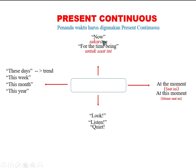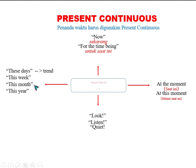Ada beberapa penanda waktu di mana seorang pembicara bahasa Inggris harus menggunakan kalimat berpola Present Continuous. Yang pertama: now atau sekarang, for the time being (untuk saat ini), at the moment (saat ini), at this moment (situasi saat ini). Jika menyangkut perubahan pola baru atau trend, maka biasanya ada penanda keterangan waktu: these days (hari-hari belakangan ini), this week (minggu ini), this month (bulan ini), this year (tahun ini), dan sebagainya.